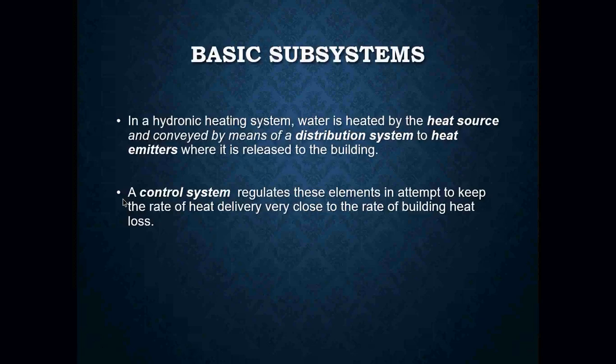In a hydronic system, we know we've got to have a boiler — something that's going to generate heat, so that's our heat source. The boiler has to be piped with distribution piping that sends hot water through our heat emitters and baseboard so it can release heat into a home or business. We also need control devices: an aquastat, thermostats, and in many cases a zone panel to control temperature throughout a home.